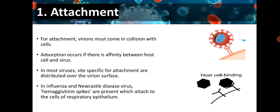For attachment, virions must come into collision with cells. Adsorption occurs if there is affinity between the host cell and the virus. In most viruses, sites specific for attachment are distributed over the virion surface. For example, in influenza and Newcastle disease virus, hemagglutinin spikes are present which attach to the cells of the respiratory epithelium.